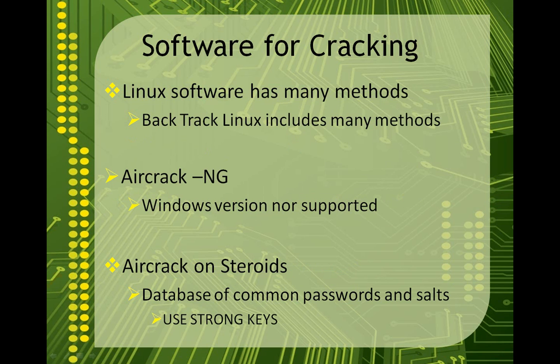There's some software made specifically for cracking into wireless networks. Most of the software is Linux based. As a matter of fact, Backtrack Linux is a collection of Linux programs designed specifically for network penetration by security professionals. This software can be used by almost anyone to easily crack WEP and weak-passworded WPA. The most common application in Backtrack is Aircrack, which allows you to easily detect WPA and WEP handshakes. If you have a weak network, Aircrack will give someone the key.